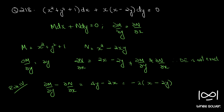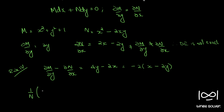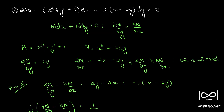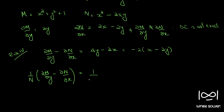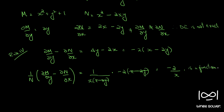Taking −2 outside, we get −2(x − 2y). Dividing by N, which is x(x − 2y), the (x − 2y) cancels and we get −2/x. This is a function of x alone, so we call it f(x) = −2/x.